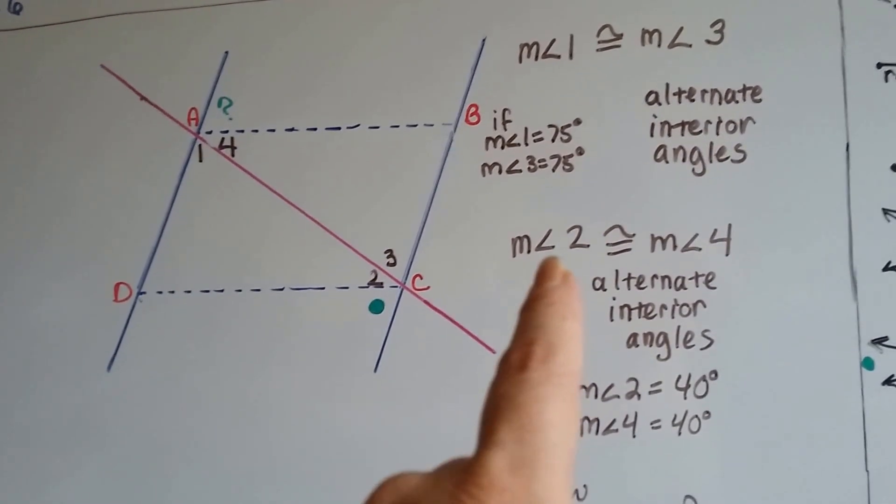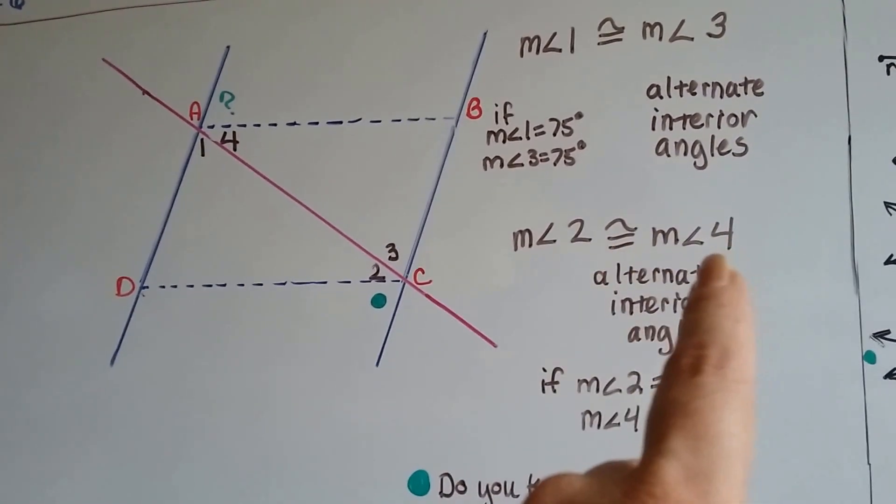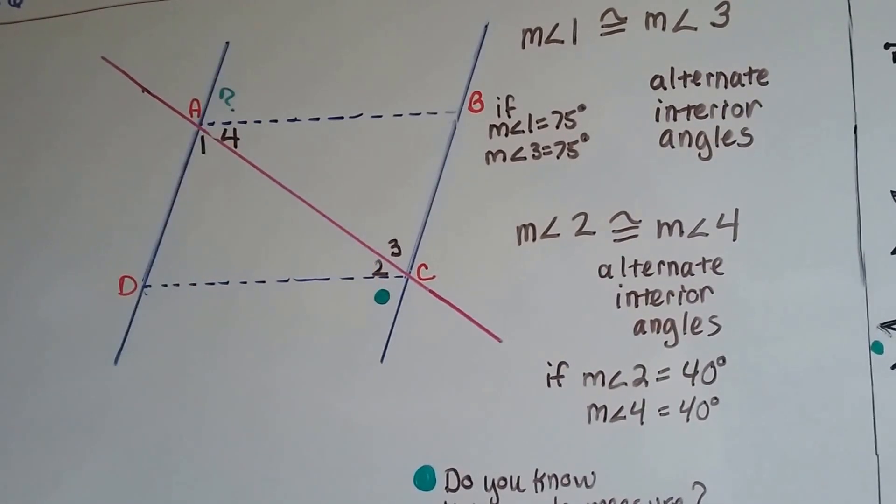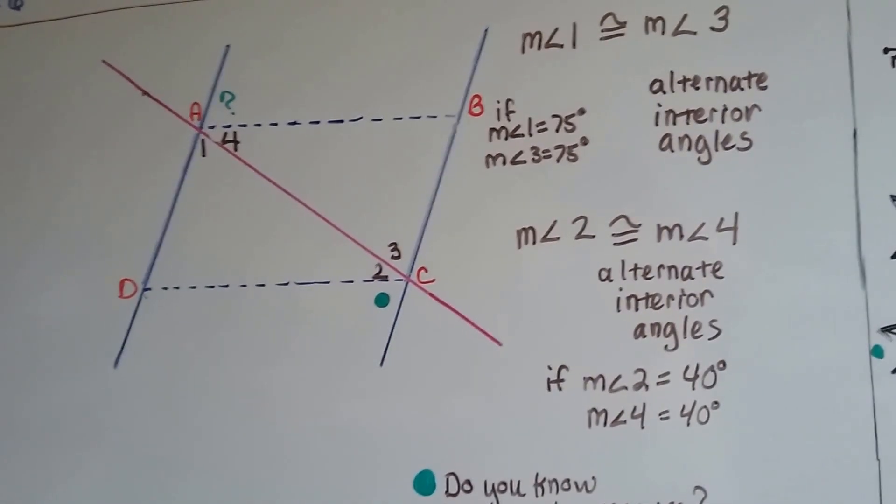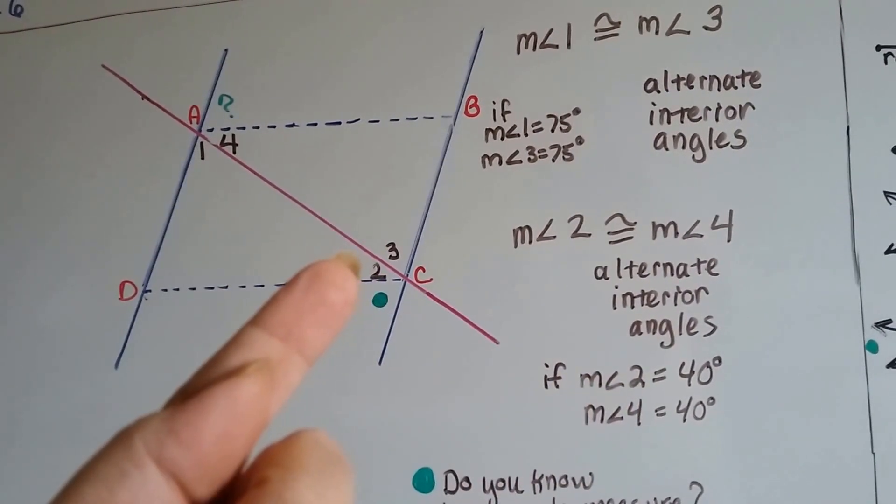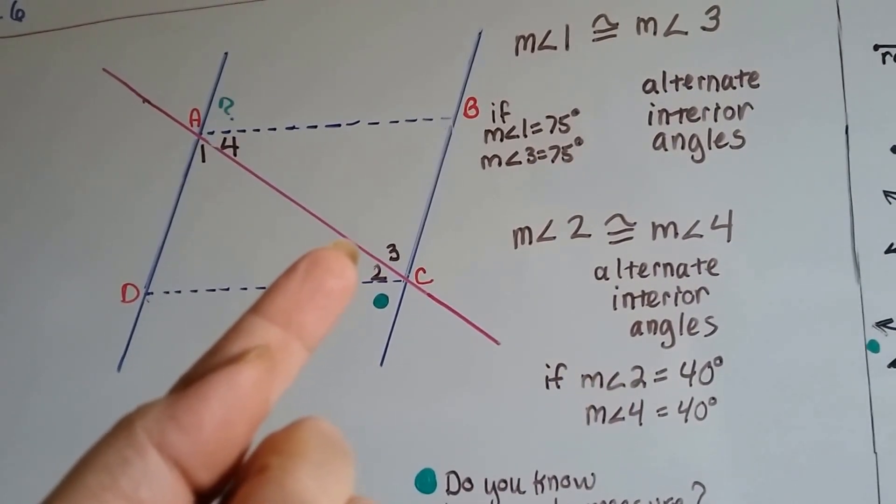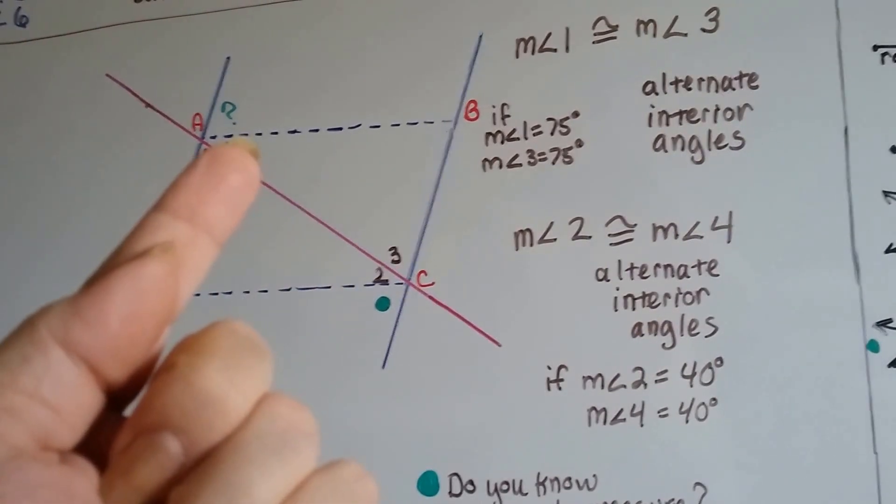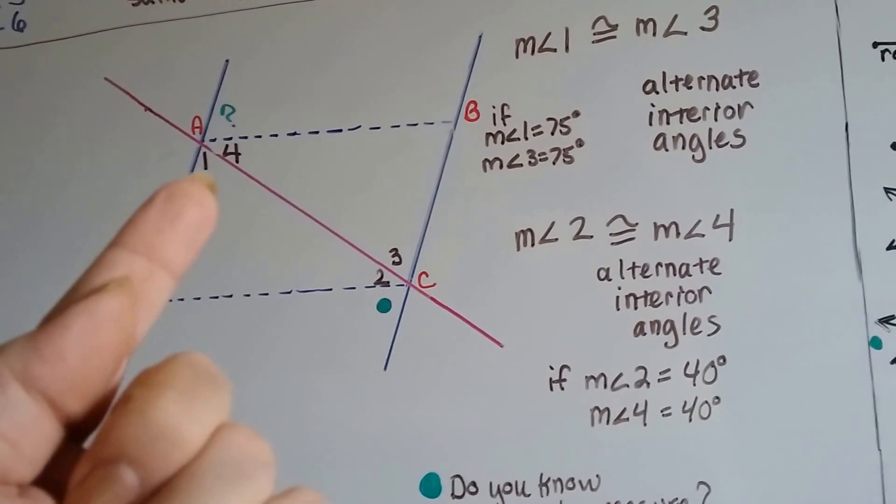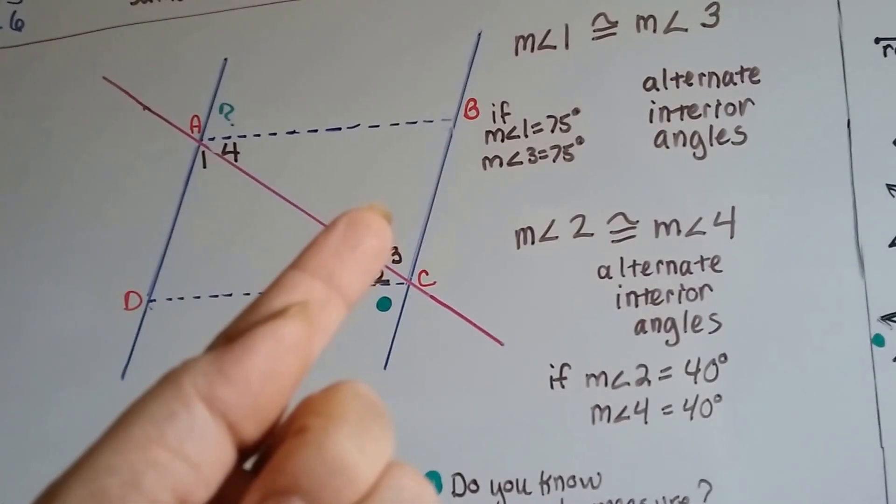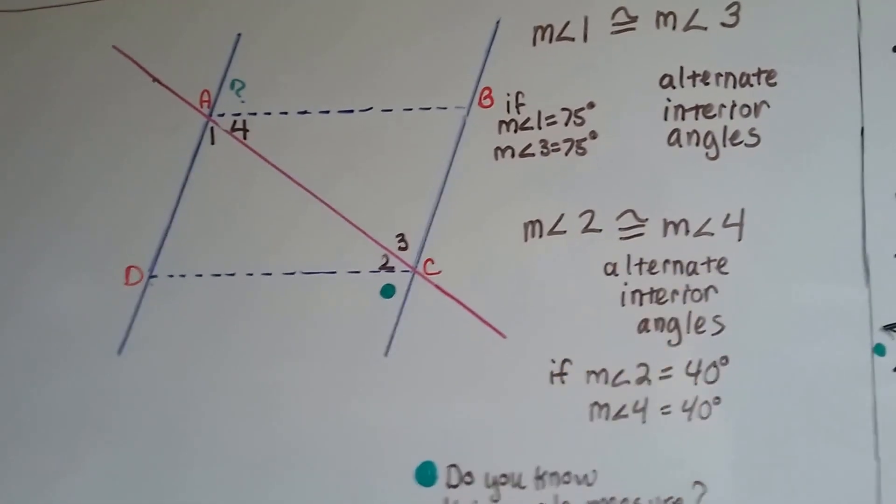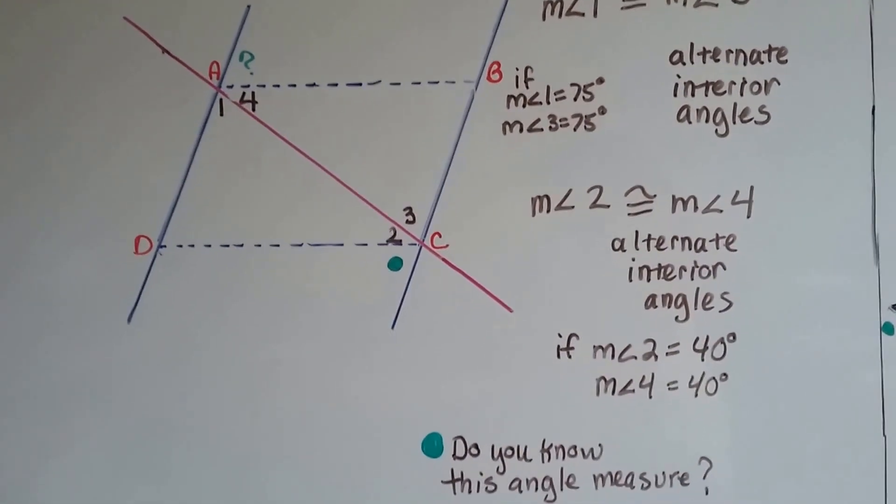We also know that the measure of angle two is going to be congruent to the measure of angle four because of alternate interior angles, these two, the two and the four. So if the measure of angle two is forty, then the measure of angle four is forty. If the measure of angle one is seventy-five, then the measure of angle three is seventy-five. It has to be because of that alternate interior angles rule.